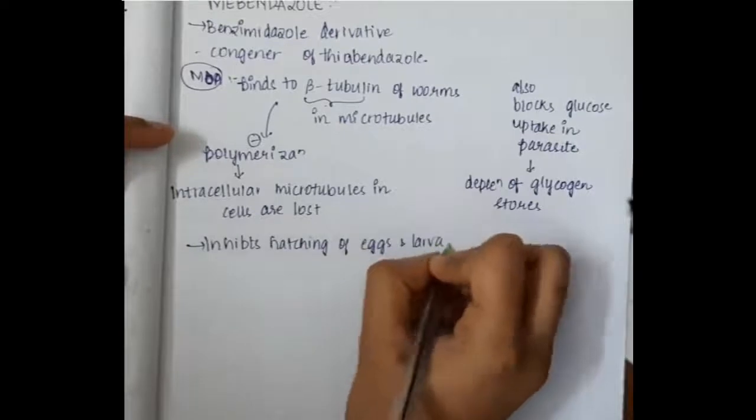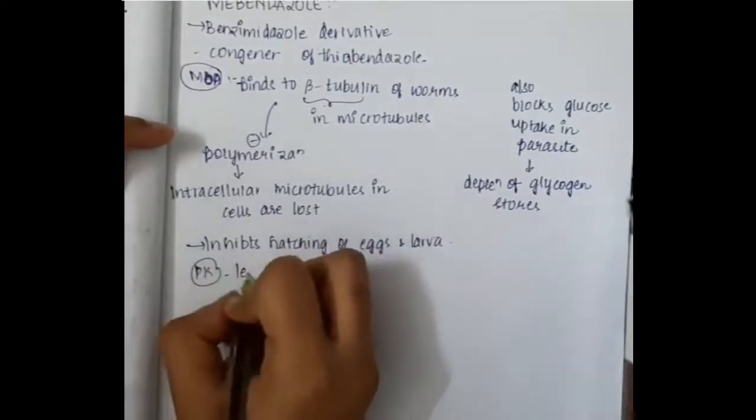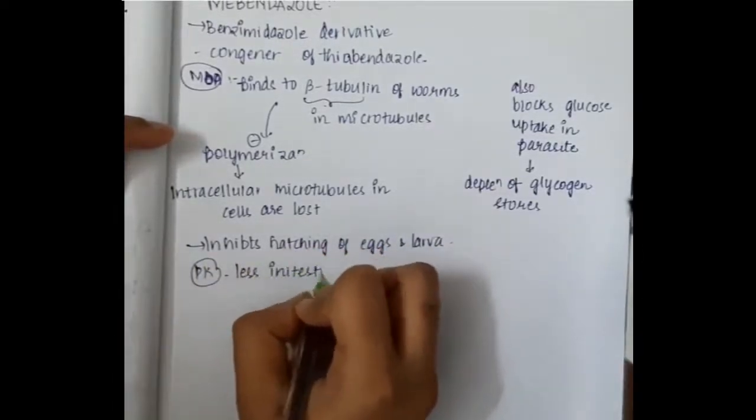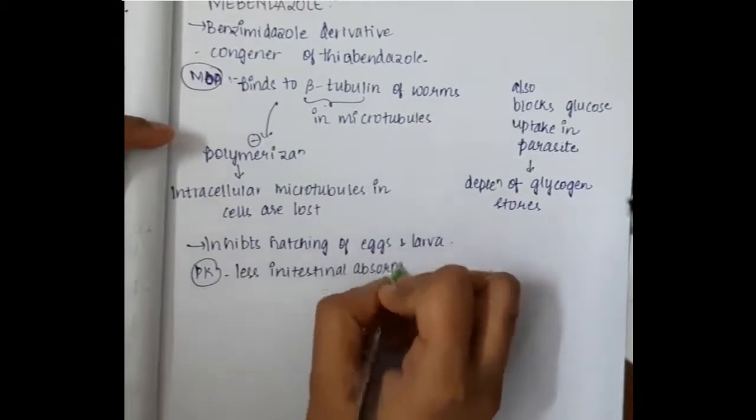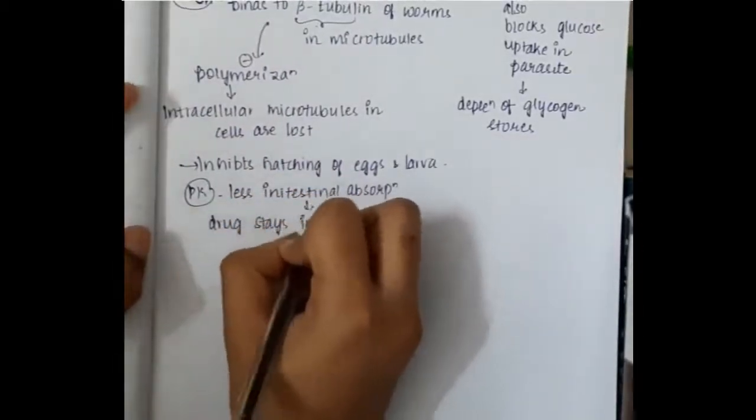It inhibits the hatching of eggs and larvae. Pharmacokinetics: mebendazole causes less intestinal absorption, and the drug stays in the lumen and acts on intestinal nematodes and is excreted in the feces.